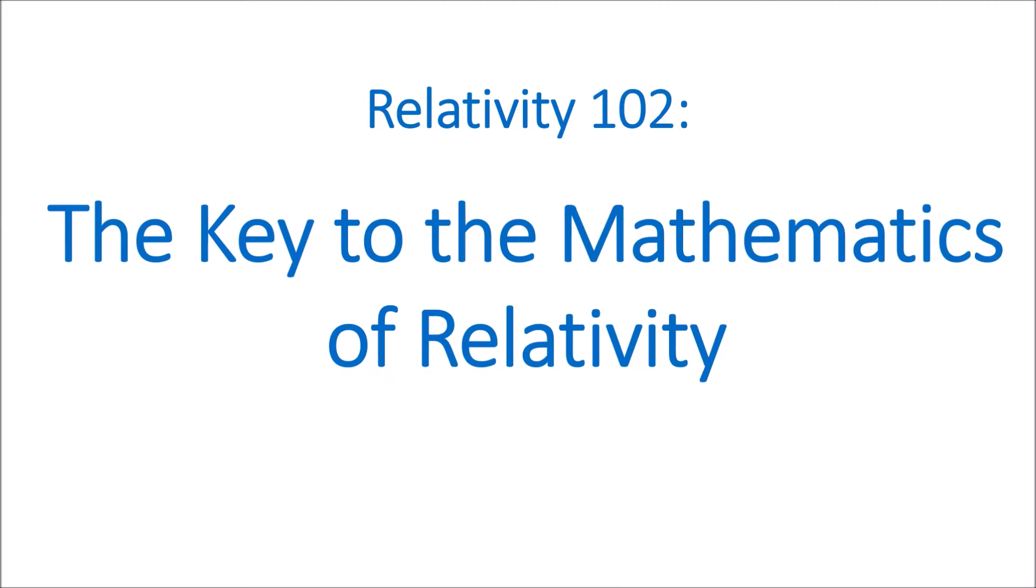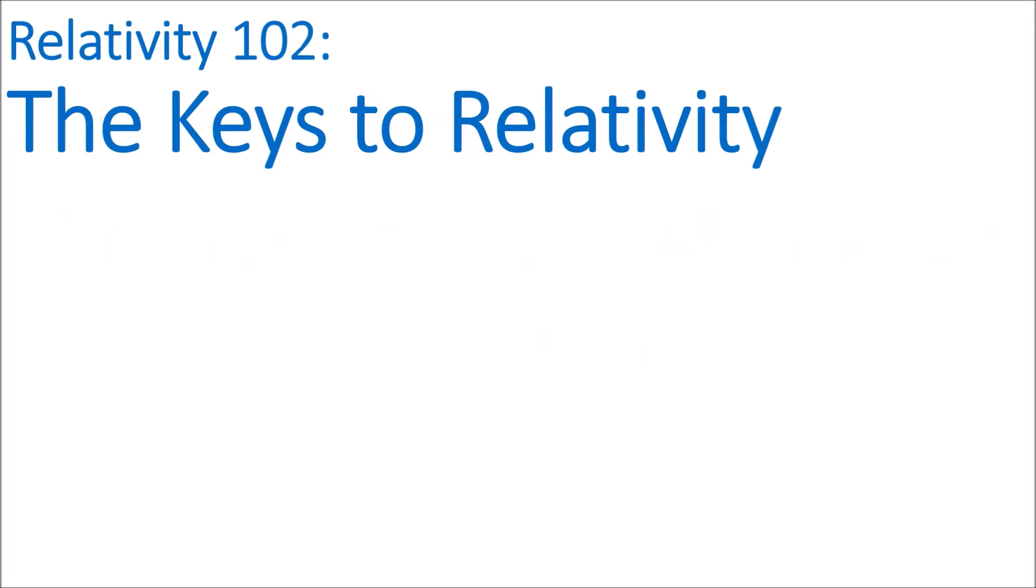Welcome to Relativity 102, The Keys to the Mathematics of Relativity. In Relativity 102, I'll be explaining what I think are the two most important mathematical ideas for understanding the math behind relativity. And those key ideas are, number one, invariance, and number two, the twin concepts of covariance and contravariance.